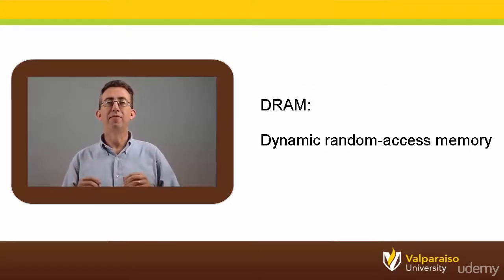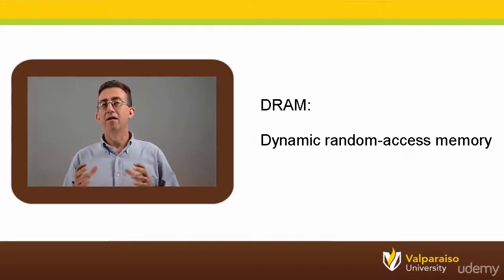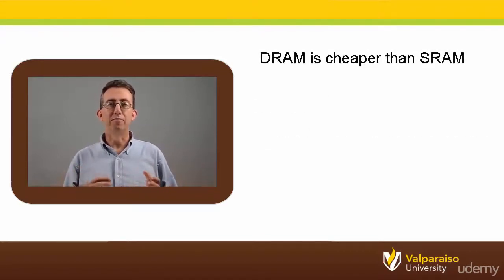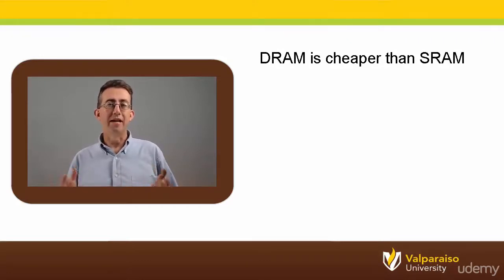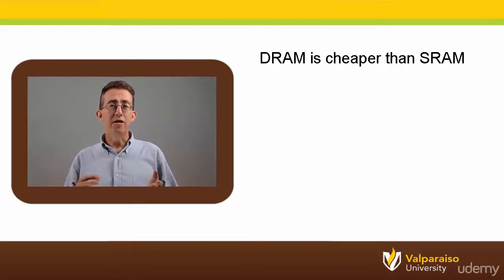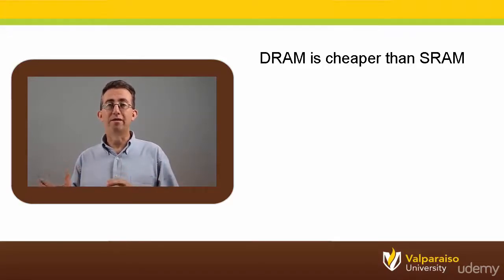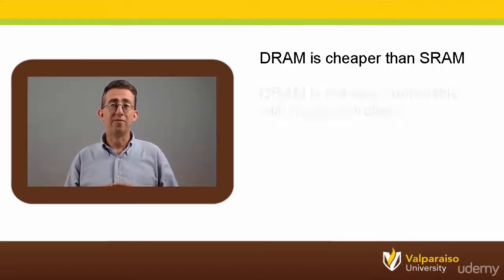Next up, dynamic random access memory, or DRAM. In some ways DRAM can be considered cheaper than static RAM. When someone says a computer has 8 gigabytes of memory, they mean the computer has 8 billion bytes of DRAM memory — compare that to the 1,000 or even 4,000 bytes of program memory that you may find in some microcontrollers.